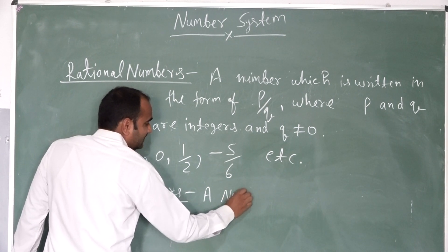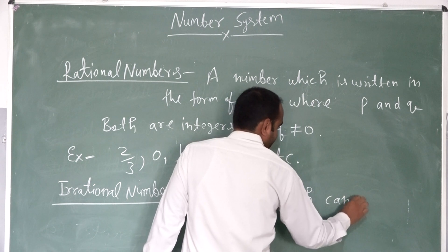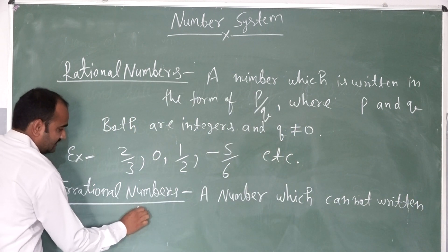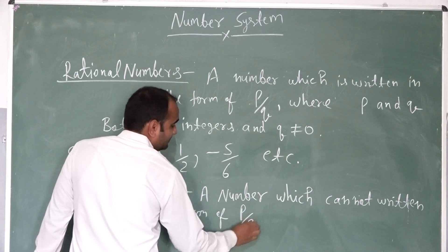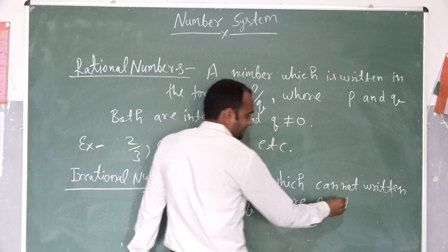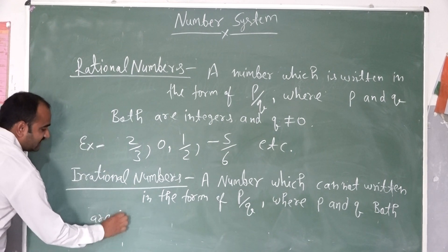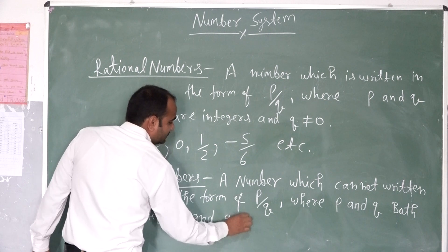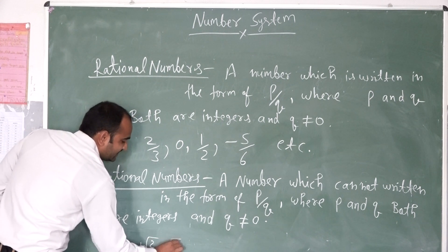A number which cannot be written in the form of P by Q, where P and Q both are integers and Q is not equal to 0. For example, root 2, root 3, root 5.